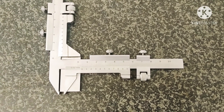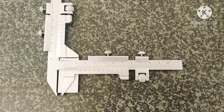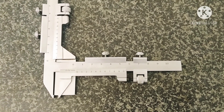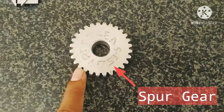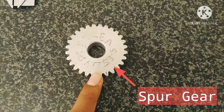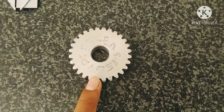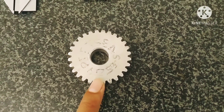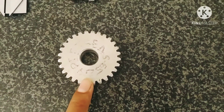Before measuring gear tooth terminology in depth, we must calculate the outside diameter, which is required to find out the different dimensions. We will find the outside diameter with the help of the horizontal scale. This is the spur gear whose terminology we are going to calculate with the help of the gear tooth vernier caliper.